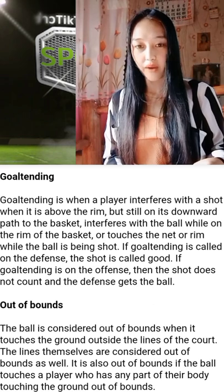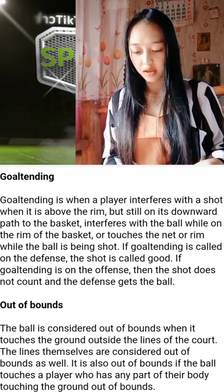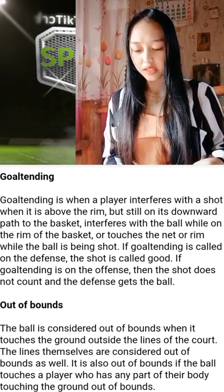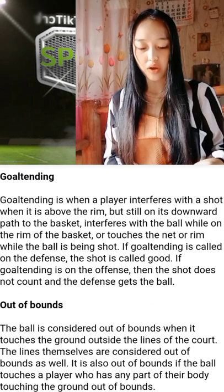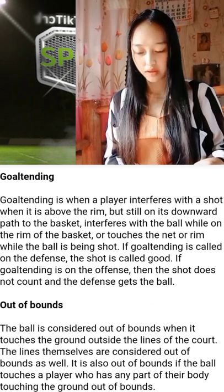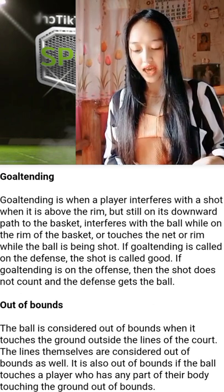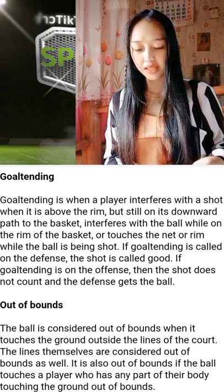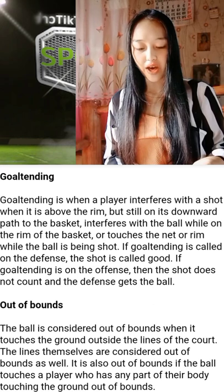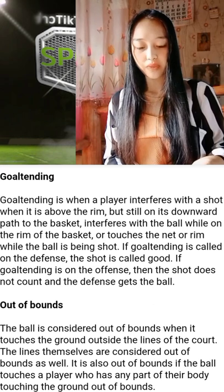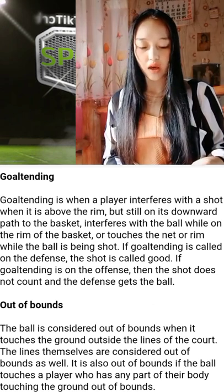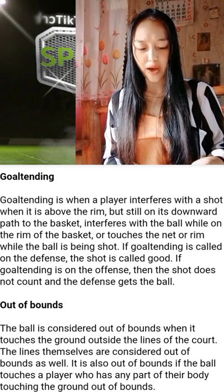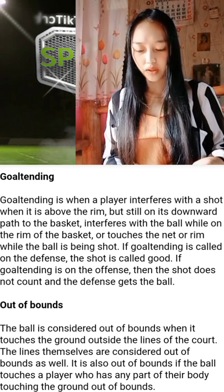Next is out of bounds. The ball is considered out of bounds when it touches the ground outside the lines of the court. The sidelines and baselines are considered out of bounds as well. It is also out of bounds if the ball touches a player who is out of bounds.